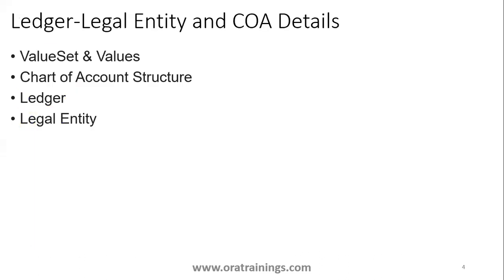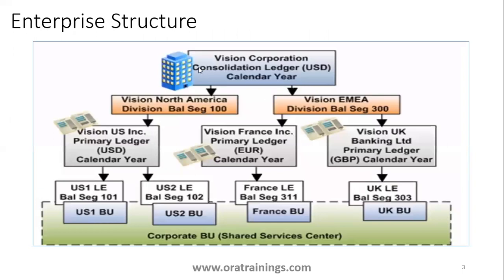Generally, if you observe the hierarchy in this example of an enterprise structure, the configuration starts with business group. Then you may also have a division. Then you'll have a ledger, and then a legal entity under it. You can assign a single ledger to multiple legal entities — the vice versa is not possible.